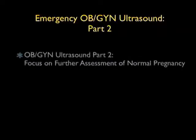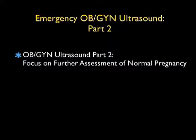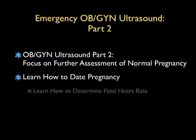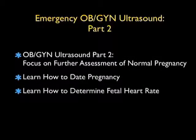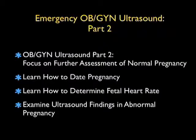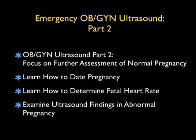In this module entitled Emergency OBGYN Ultrasound Part 2 of Intrauterine Pregnancy, we're going to focus on the further assessment of normal pregnancy. We'll look at two further things: learning how to date the gestational age of the pregnancy, as well as learning how to determine the fetal heart rate. Then we'll wrap up by examining further findings in abnormal pregnancies and learning how to differentiate these findings from a normal intrauterine pregnancy.